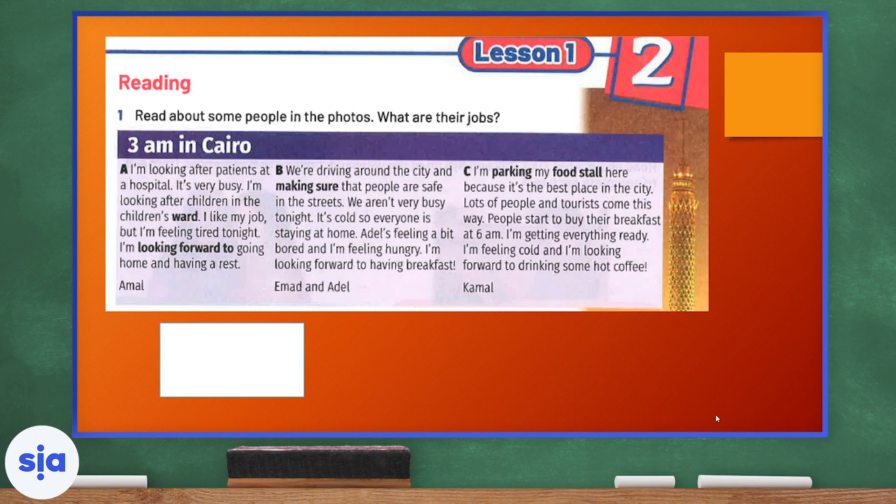B. We're driving around the city and making sure that people are safe in the streets. We aren't very busy tonight. It's cold, so everyone is staying at home. Aydin's feeling a bit bored and I'm feeling hungry. I'm looking forward to having breakfast. Ahmed and Aydin. C. I'm parking my food stall here because it's the best place in the city. Lots of people and tourists come this way. People start to buy their breakfast at 6 a.m. I'm getting everything ready. I'm feeling cold and I'm looking forward to drinking some hot coffee. Kameh.